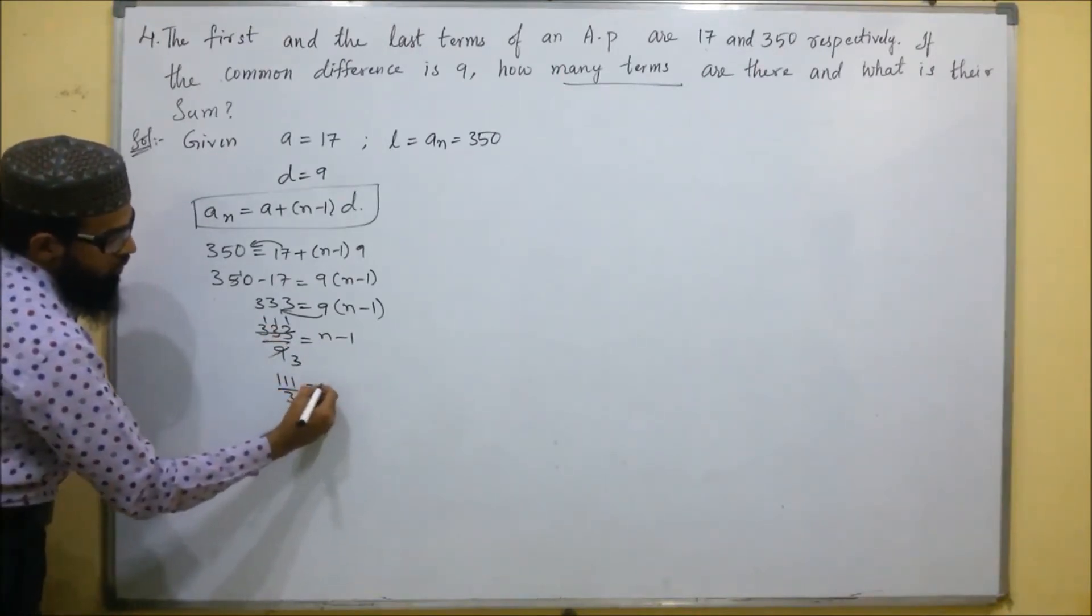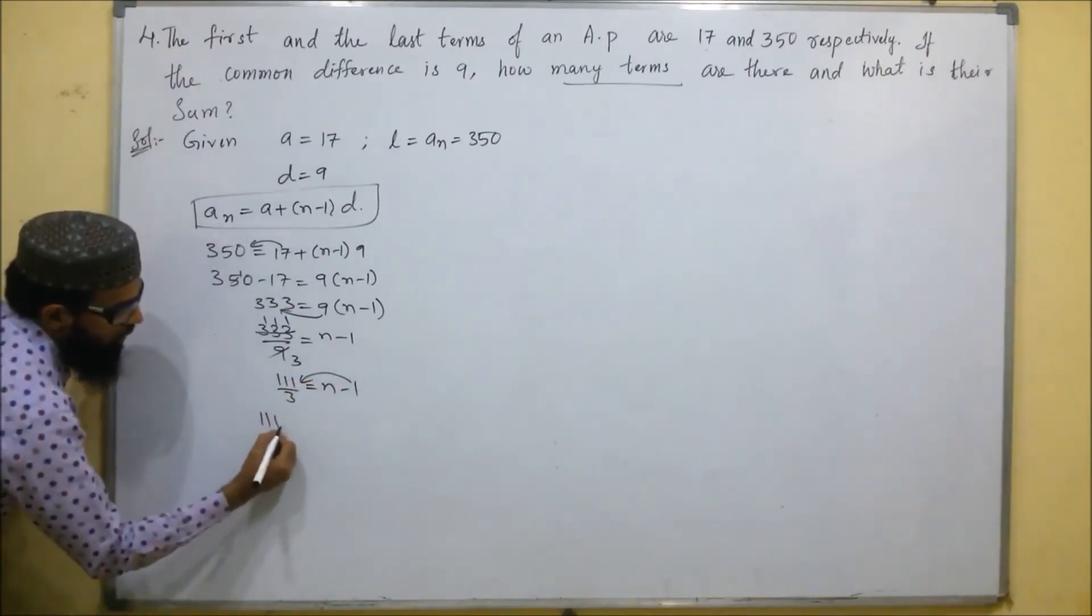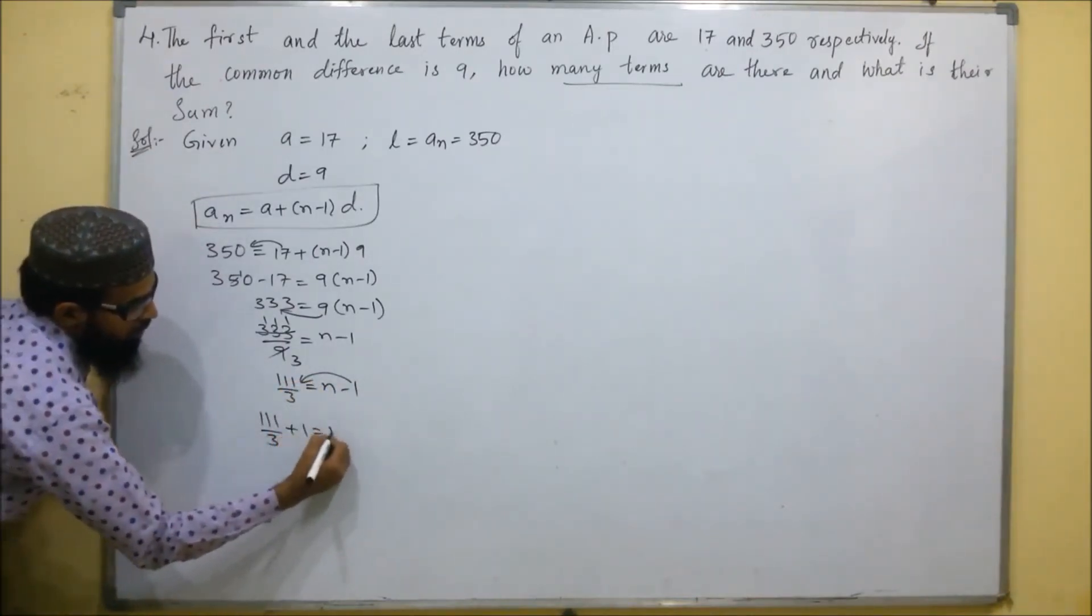So 1 by 3 equals N minus 1. Minus 1 comes here, so 1 by 3 plus 1 equals N.